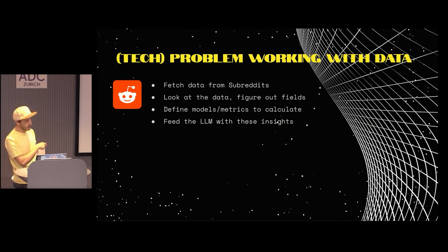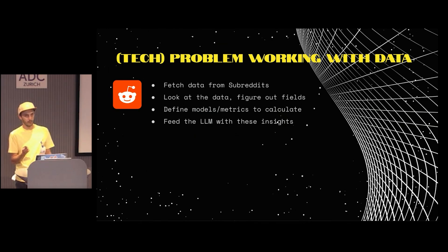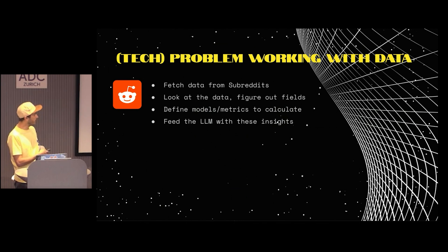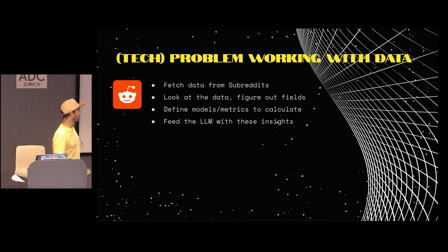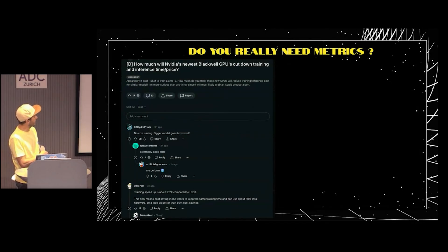The technical problem now is that I need to work with data. I need to fetch data from the subreddit API, look at the data, figure out which fields I need, define models and metrics to calculate some things, and feed everything to the AI to summarize. Why do you need to calculate things? Well, take a subreddit post for example — you have a couple of metrics there.